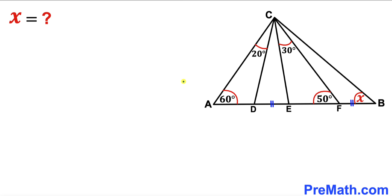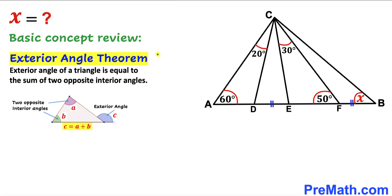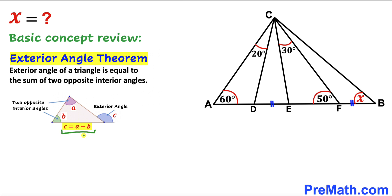Let's get started with the solution. First, let's review the exterior angle theorem. According to this theorem, the exterior angle of a triangle is equal to the sum of the two opposite interior angles. So angle C equals angle A plus angle B.